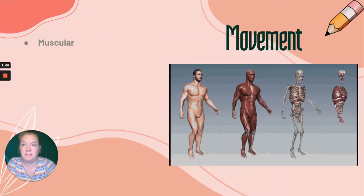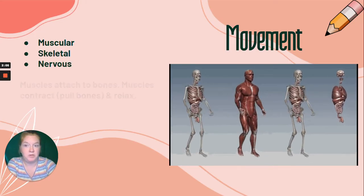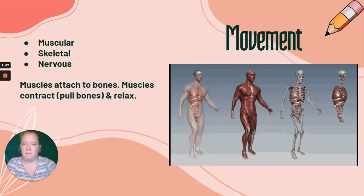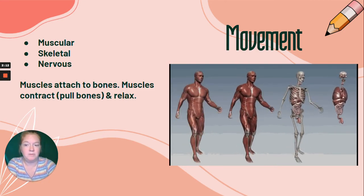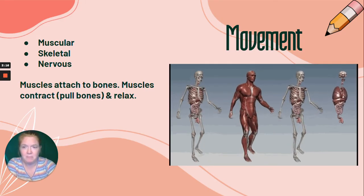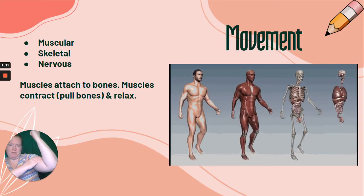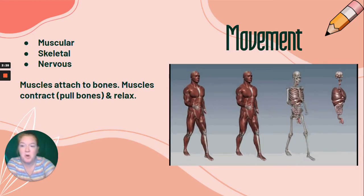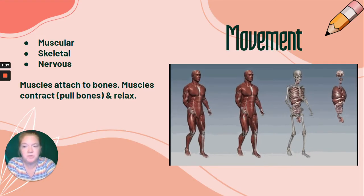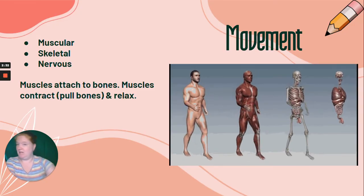Let's talk about movement. Movement involves the muscular system, the skeletal system, and the nervous system. Muscles attach to bones, and muscles contract to pull bones, then relax. Muscles never push — muscles only pull. When I bend my arm, this muscle pulls, and when I straighten my arm, this muscle pulls. There's no pushing, ever. Muscles only contract to pull or relax.